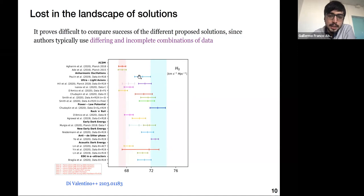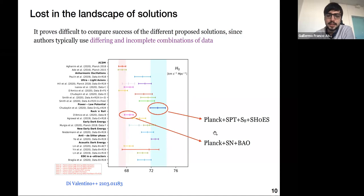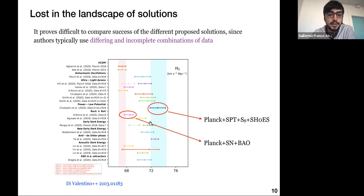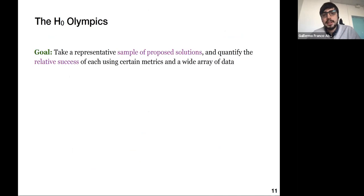From this review, it becomes difficult to compare the relative success in resolving the tension because authors typically use different and incomplete compilations of data. Here I'm showing a plot from this review paper showing predictions of the Hubble constant for very different models. The pink band shows the value inferred by Planck assuming Lambda CDM and the blue band shows the value directly measured by SH0ES. This comparison is actually very misleading because different analyses use different data combinations — in particular, some use a SH0ES prior while others do not, which is known to produce very large differences in results.